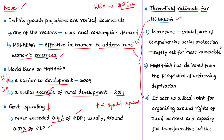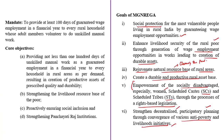The first rationale is theoretical: wage employment is a crucial part of comprehensive social protection, and these wages serve as a safety net for the most vulnerable in society — social protection for vulnerable sections. The second rationale is empirical: MGNREGA has delivered on its promise from the perspective of addressing deprivation despite some shortcomings. By strengthening the livelihood resource base of vulnerable sections, they come out of deprivation and social inclusion is ensured.